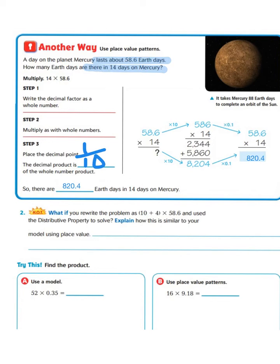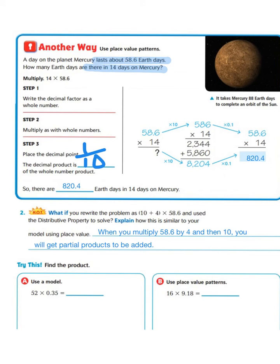Now let's look at this question: what if you rewrite the problem as (10 plus 4) times 58 and 6 tenths and use the distributive property? Explain how this is similar to your model using place value. Using our knowledge of the distributive property, we know that when you multiply 58 and 6 tenths by 4 and then by 10, you will get partial products to be added — which is similar to how the model works.